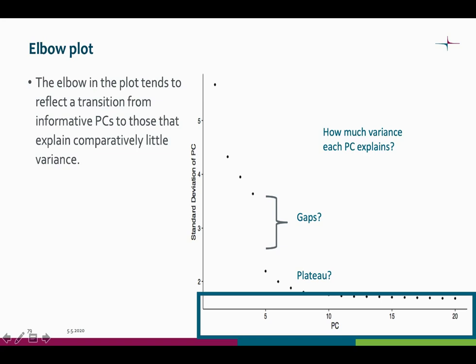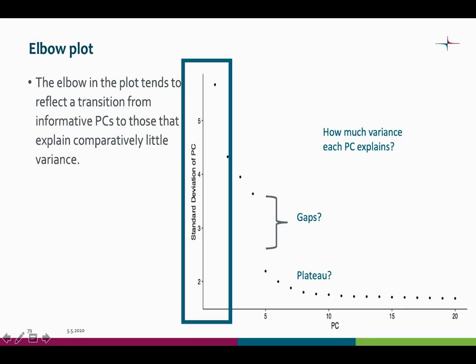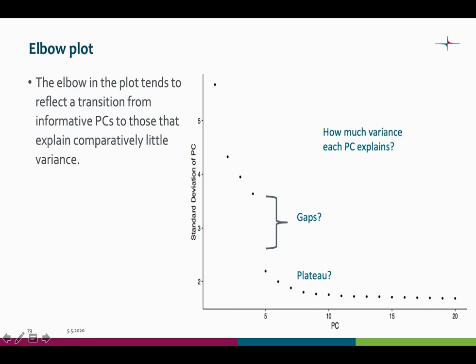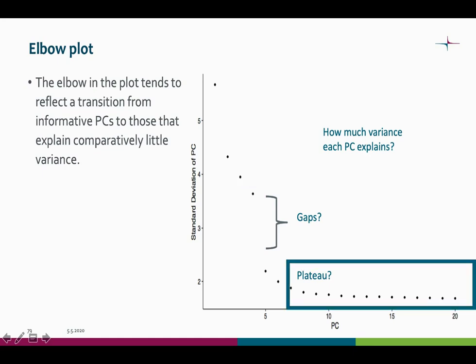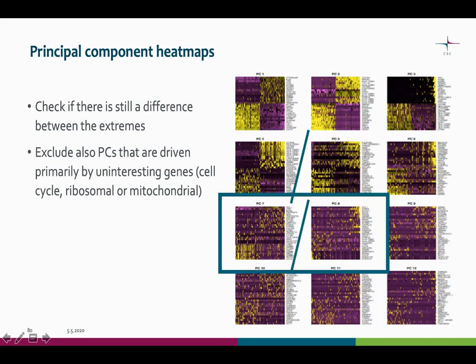The elbow plot is one of the plots you can use to determine the number of principal components to use in the analysis. By default we count 20 of them, and the plot shows the standard deviation of the principal components — how much variance is explained by each. How to decide which to include? You can look for gaps or when the curve reaches a plateau. Looking at the heatmaps is another option: you are trying to check if there is still a difference between the extremes. Where to draw the line is hard to say — you might want to do some test runs.